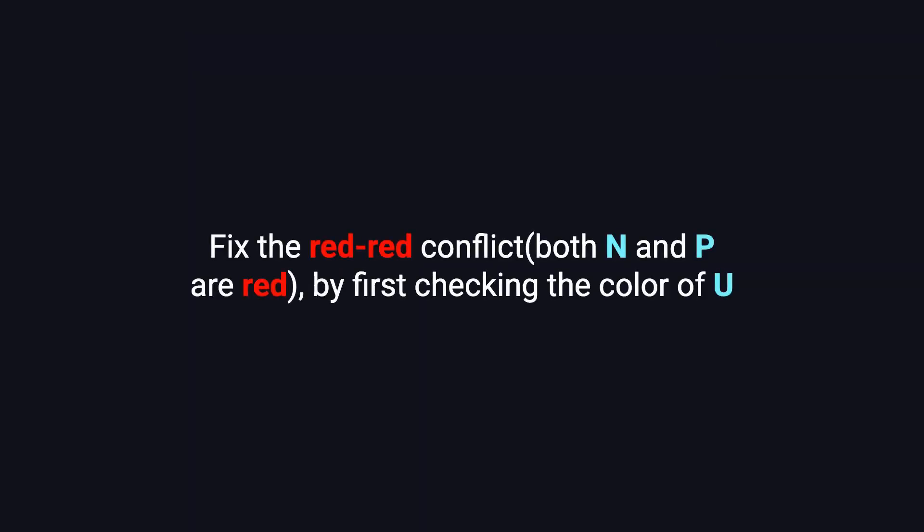All the remaining cases involve fixing red-red conflicts, meaning both N and P are red. To resolve this, we first check the color of U, the uncle node.